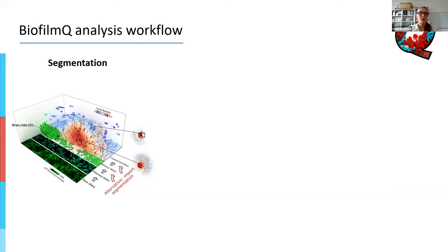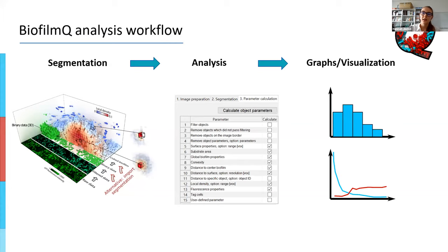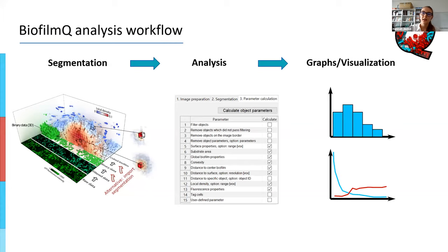Now I'm going to walk you through what BiofilmQ can do and how it works. In general, you always have a segmentation step during which you identify your structure compared to the background. This is followed by an analysis step during which you choose which properties you want to calculate for your structure. And then finally, we have a visualization part that lets you visualize these properties in different types of graphs. The visualization part is also really useful because it's integrated into BiofilmQ — you can go back and forth, change some segmentation parameters, and look at what changes in the visualization to get a feeling for how tweaking parameters affects your results.